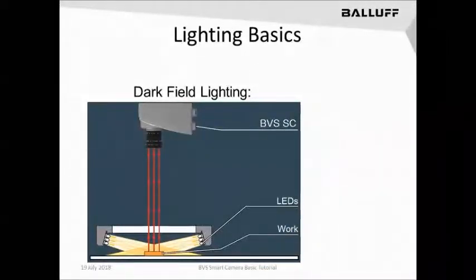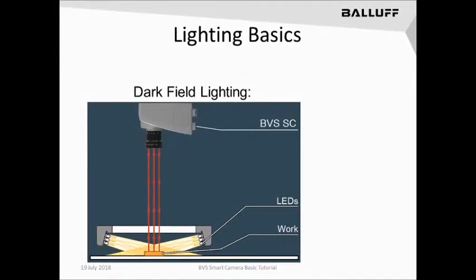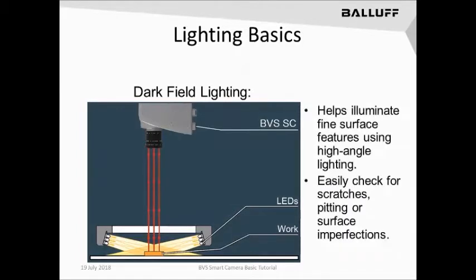A dark field light source, which typically looks like a very highly flattened ring light, is used to reflect light against the surface of an object at such an angle that it makes it very easy to detect surface flaws or surface features. Through this use of high-angle lighting, it is easy to check for scratches or imperfections on the surface of an object, as the light reflects off of that imperfection directly into the camera, highlighting or contrasting that imperfection very easily.